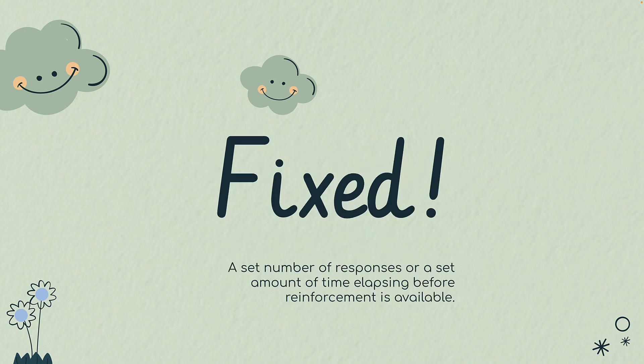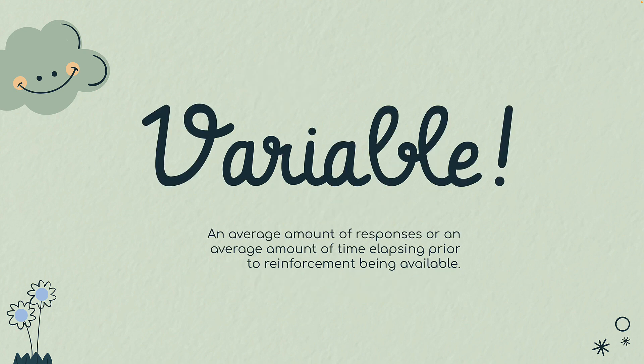Then we're going to look at fixed and variable. Fixed means set — so a set number of responses or, in an interval schedule, a set amount of time. Either a set number of responses for a fixed ratio, or a set amount of time that needs to elapse in a fixed interval schedule. Then we have variable. Words like 'average,' 'rough,' or 'about' tell me it could be a variable schedule. After an average number of responses — that would be a variable ratio. Or a variable amount of time and then a response after that — that would be a variable interval. That's the most basic form.